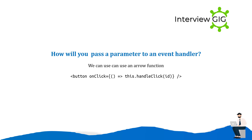How will you pass a parameter to an event handler? We can use an arrow function: this.handlerClick = () => { ... }